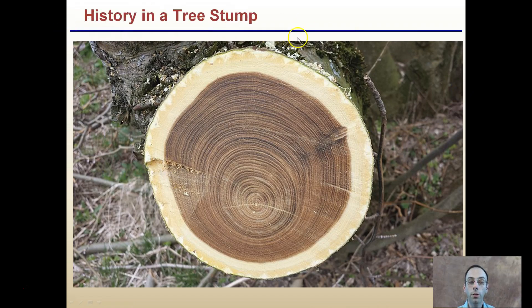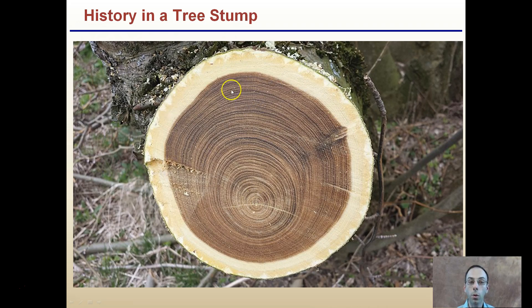I posed the question: what's the history of this tree stump? We can see there's a lot more growth towards the upper region than down here. This could be due to shade on one portion of the plant, more competition, or more sunlight on one side making it easier to grow — that's why you get the differences. It's important to look at a tree stump, as it can tell you about the history of what that tree experienced throughout its life cycle.